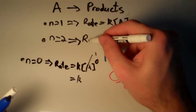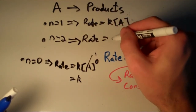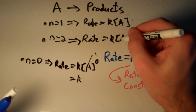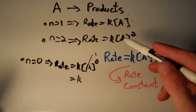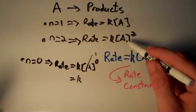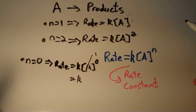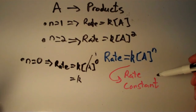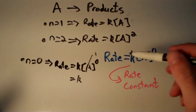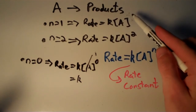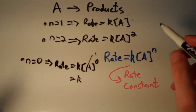And if n equals two, the rate is equal to K times the concentration of A squared. That means the rate is proportional to the square of the concentration of the reactant. These are what we call zero order, first order, and second order reactions.